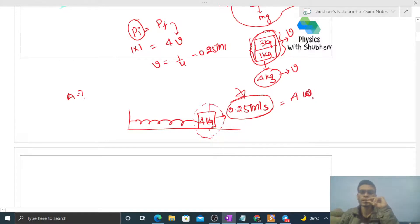Now k will be 100; k doesn't change. But mass changes. Mass becomes how much? For this block, 4 kilogram. So you can see under root of k by m will be simply under root of 25, which is 5.